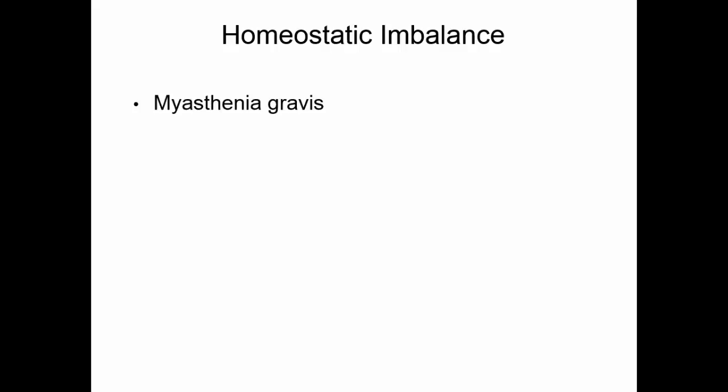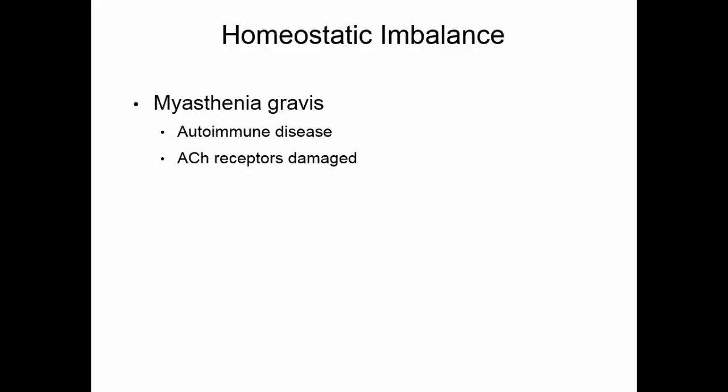Myasthenia gravis is an autoimmune disease where those acetylcholine receptors are damaged. This means that acetylcholine cannot cause a depolarization of the muscle cell, and we have faulty muscle contraction. This usually affects the neck and face muscles, so we see droopy upper eyelids and eventually difficulty with swallowing.